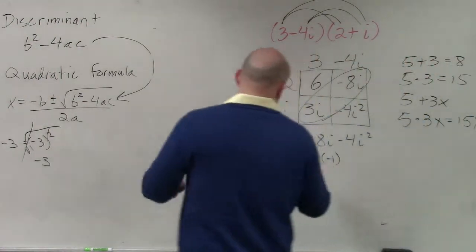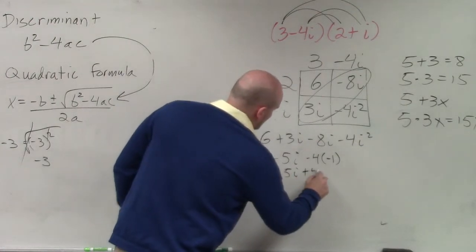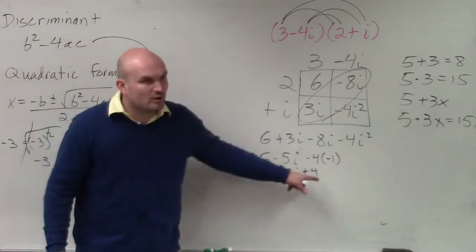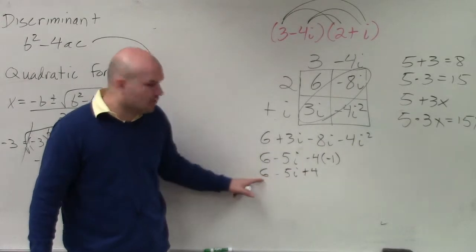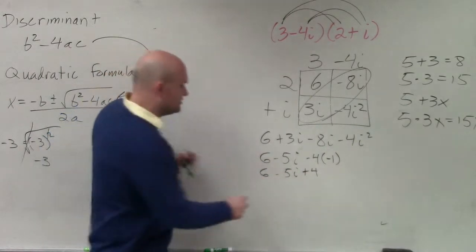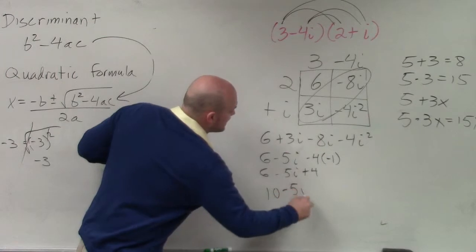Now, what is negative 4 times negative 1? Positive 4. And then, we're combining. We can only combine 4 with 6. We can't combine 4 with negative 5i. So it's 10 minus 5i.